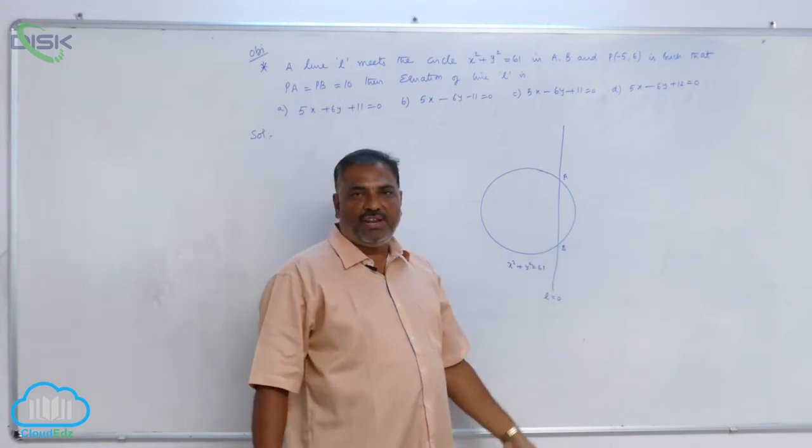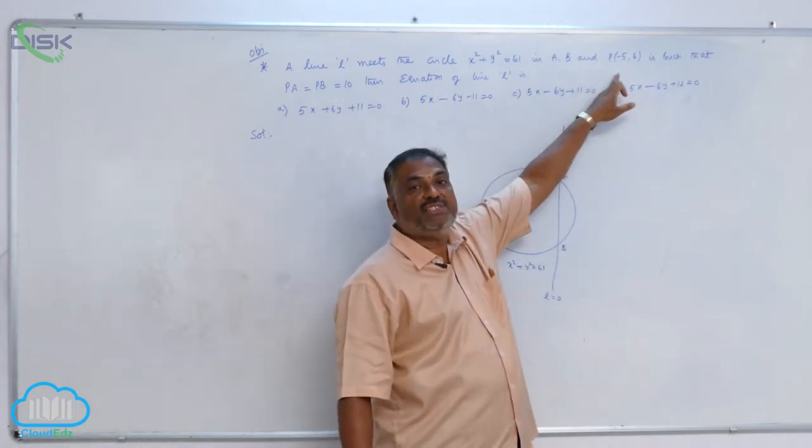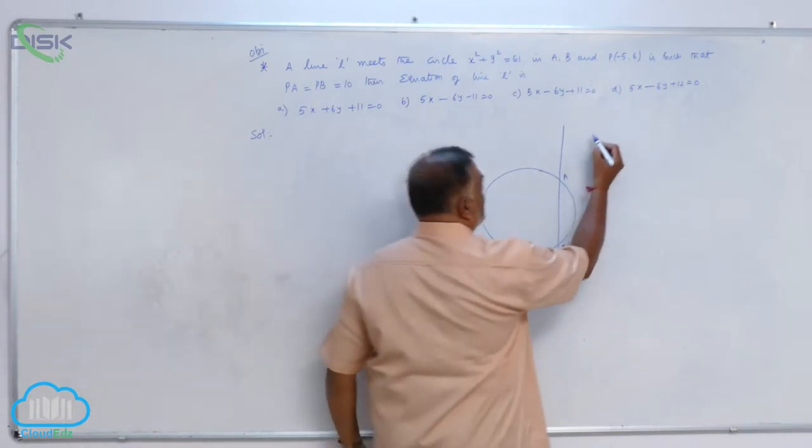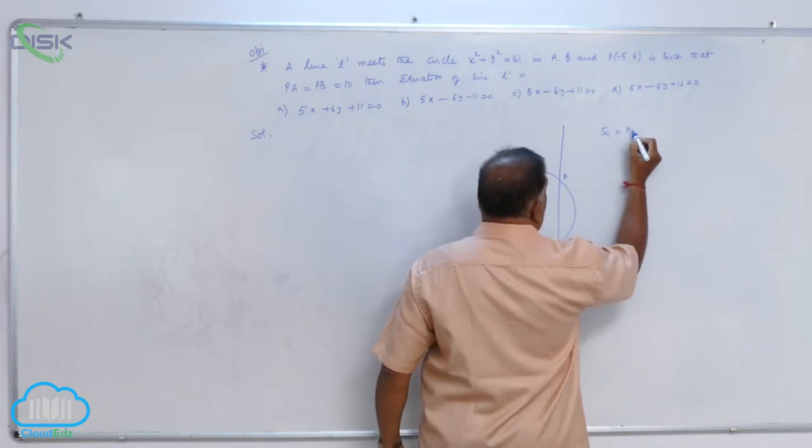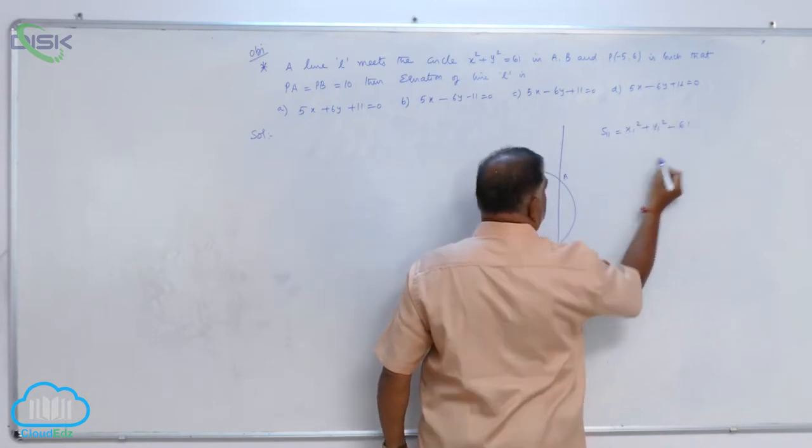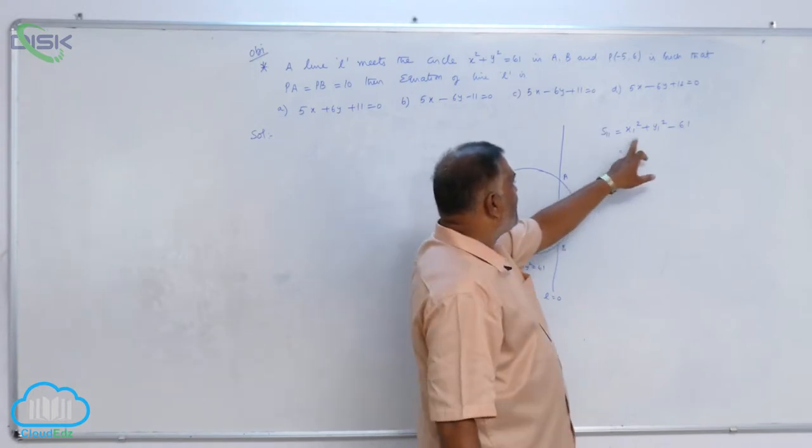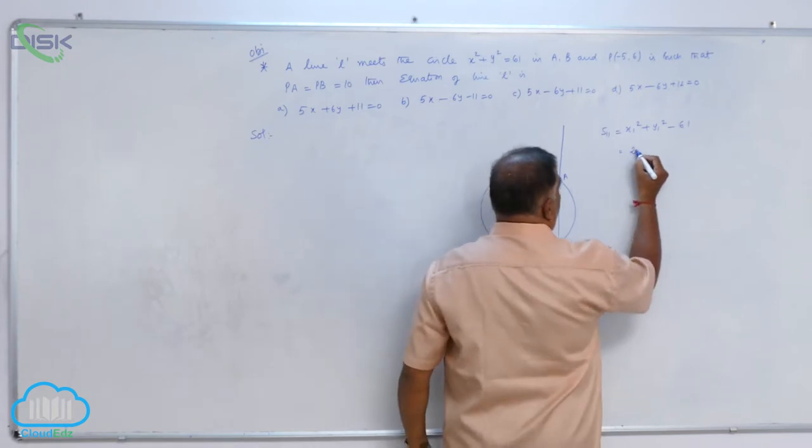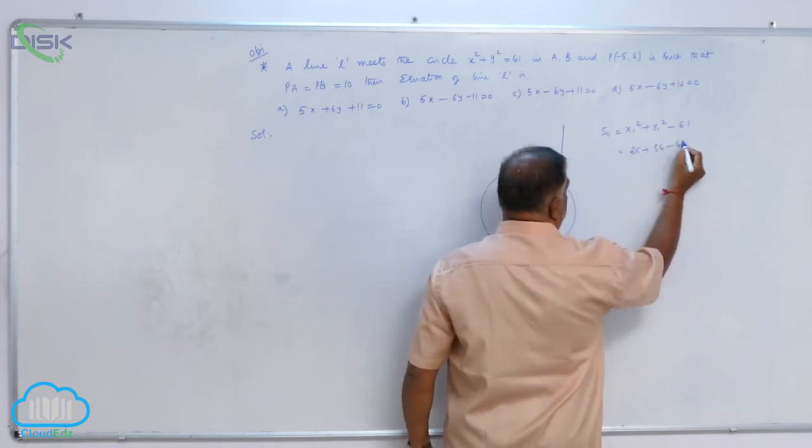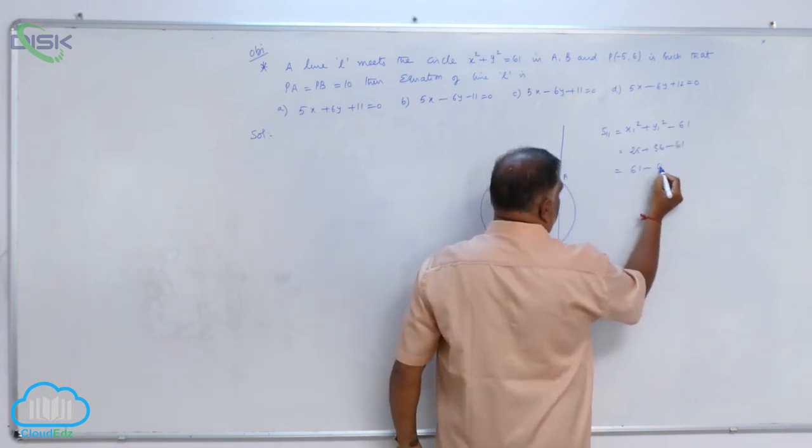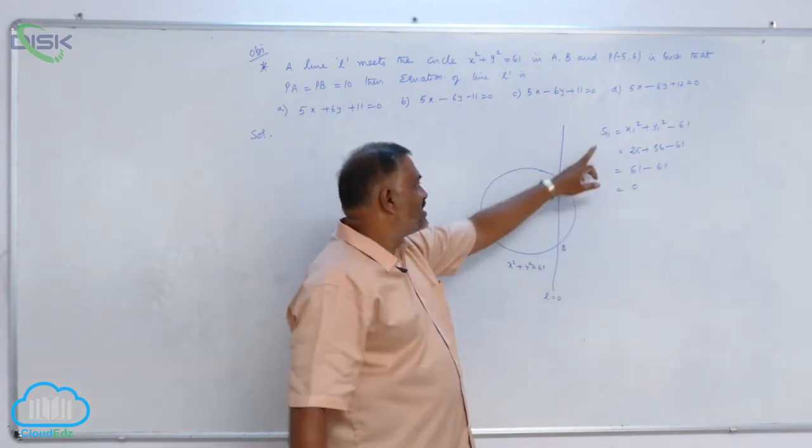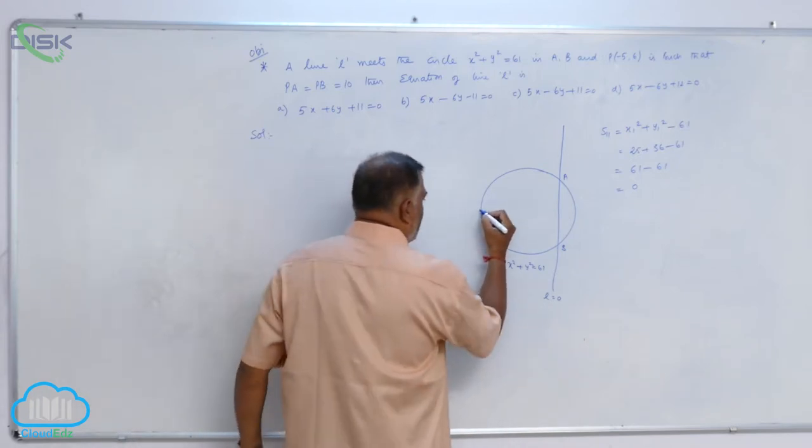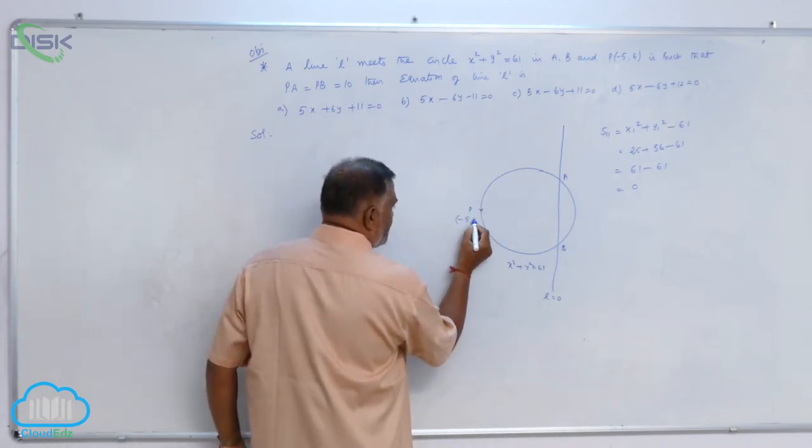First of all, we have to identify where the point P is located. The position of the point is decided by S11. S11 of the circle is x1 square plus y1 square minus 61. In place of x1, y1, substitute the point minus 5 comma 6. So 25 plus 36 minus 61, 61 minus 61 is equal to 0. S11 is equal to 0 means point lies on the circle. Let us write P here minus 5 comma 6.